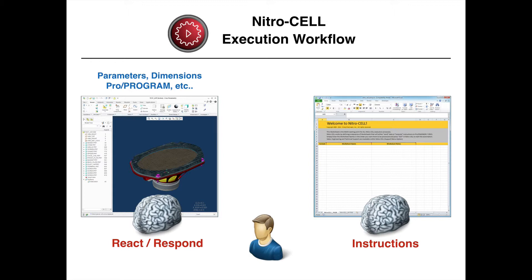For example, your Creo environment is going to have the basics like parameters, dimensions, and Pro Program — which is a very capable and useful tool — and you want to have that stuff there, but you want to move your instructions for what's occurring to the other environment. So your automation process is documented outside of that, which means that your models are going to be more autonomous, reusable across different designs, and more shareable.